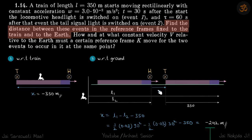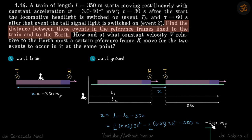So x equals l1 minus l2 minus 350. By simple algebra, this is: one-half times acceleration times 90 squared, minus one-half times 0.03 times 30 squared, minus 350. Solving this — half acceleration into time squared minus the train length — gives an answer of minus 242 meters.